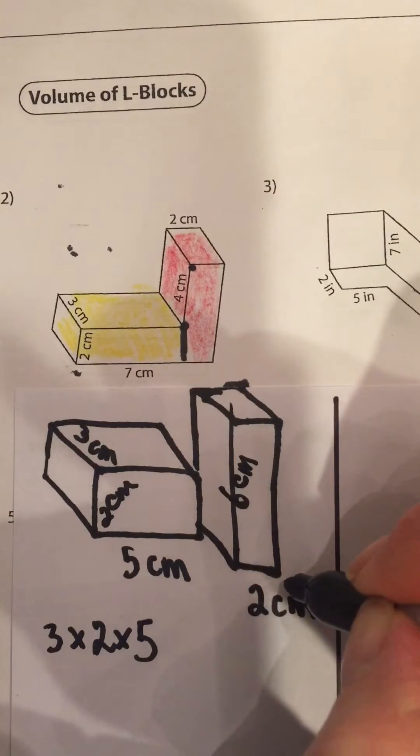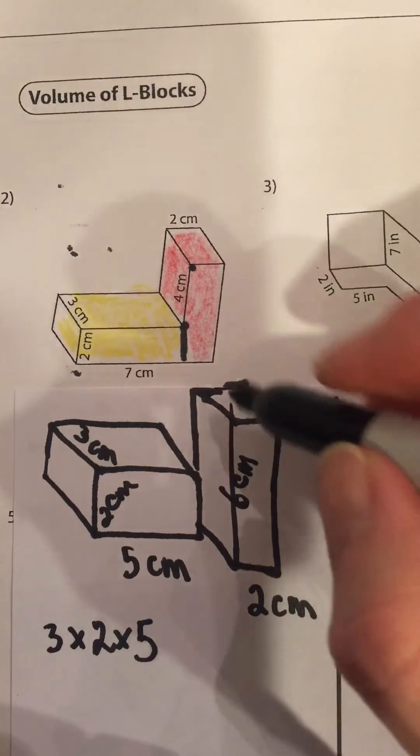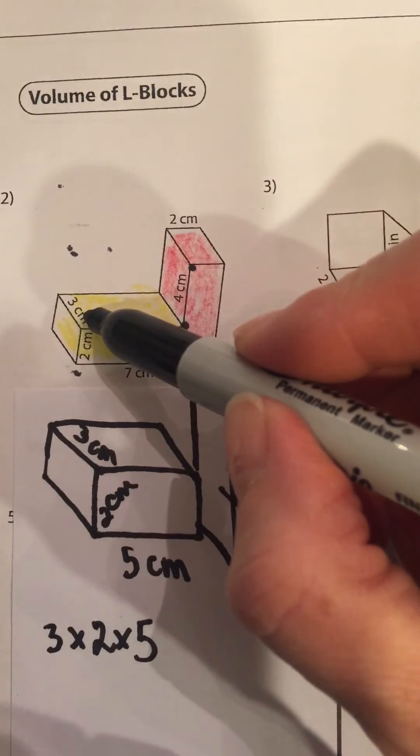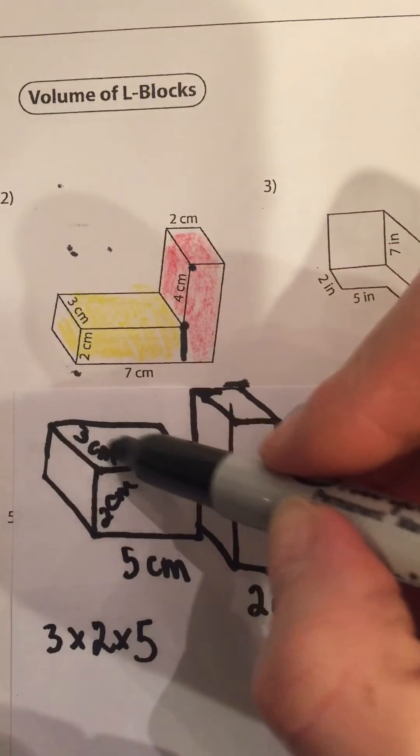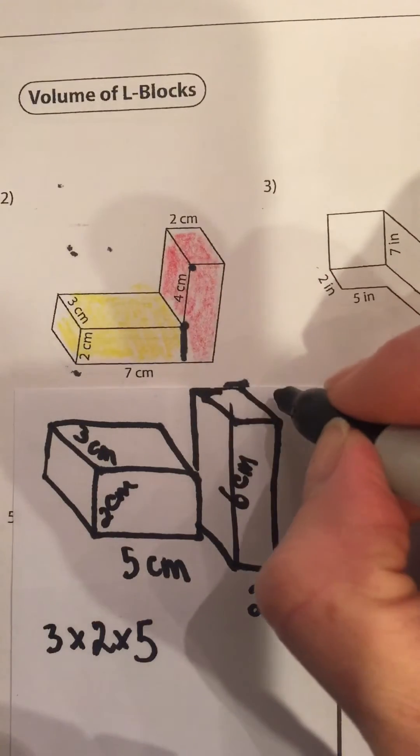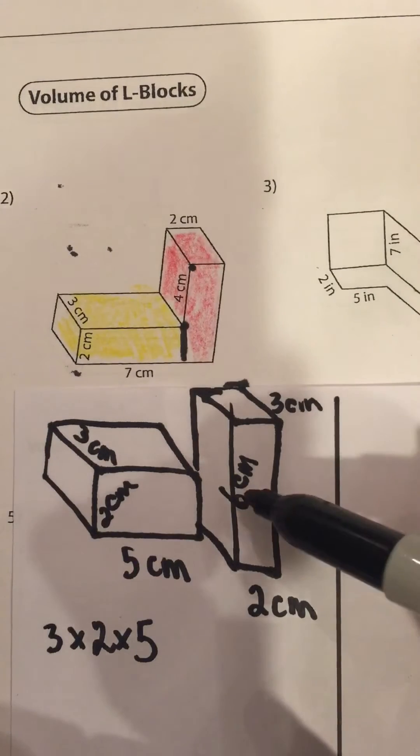So it's two centimeters wide, six centimeters high, and how deep is it? Well if we know the depth for this side was three and it's the same width here, it's the same depth I should say, I'm going to label that three centimeters. So the dimensions for our second rectangular shape here are three by six by two.